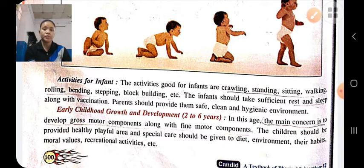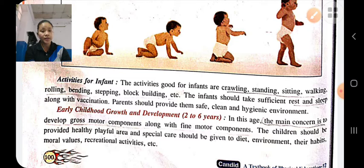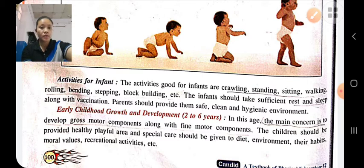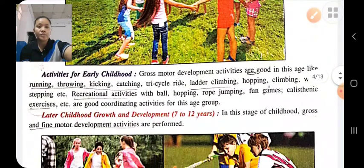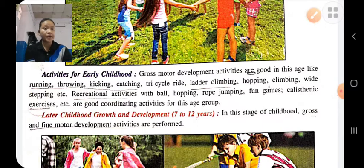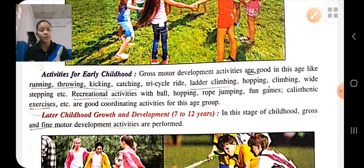The environment should be safe, clean, and hygienic. Early childhood stage is from two to six years. At this stage, both gross motor development and fine motor development take place. Children should be provided a healthy, playful environment, proper diet, etc. The child should perform activities like running, throwing, kicking, climbing ladders, ball catching, fun games, rope jumping, etc., for proper gross and fine motor development.